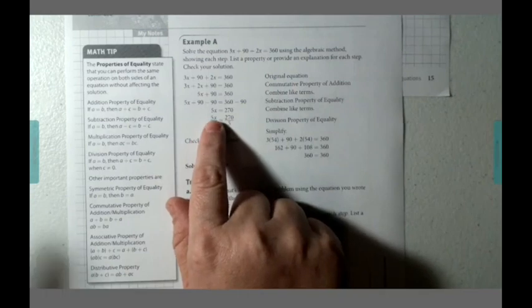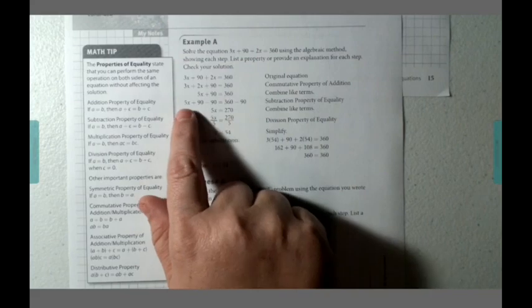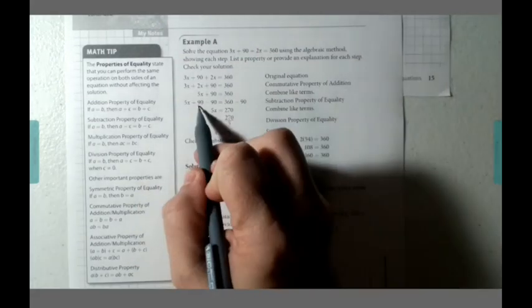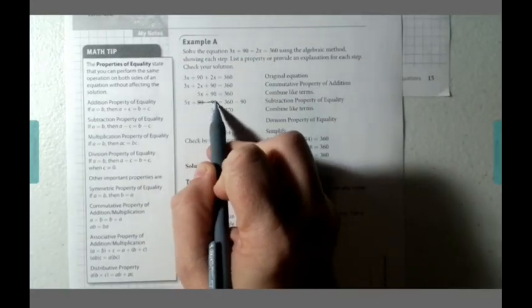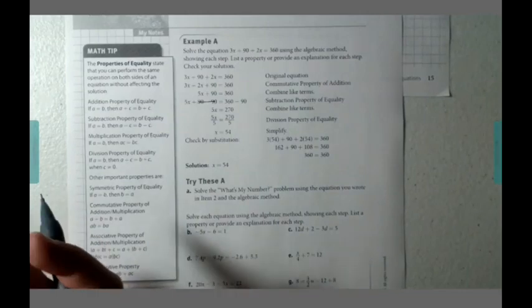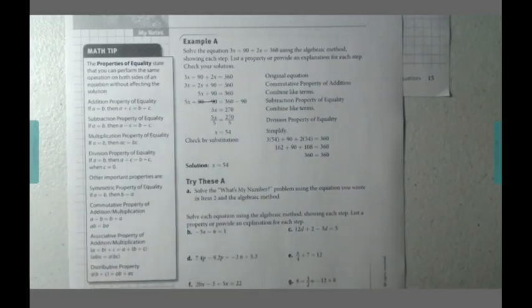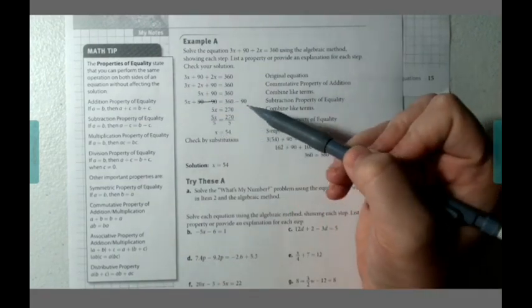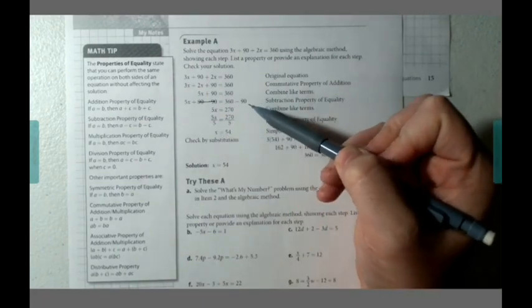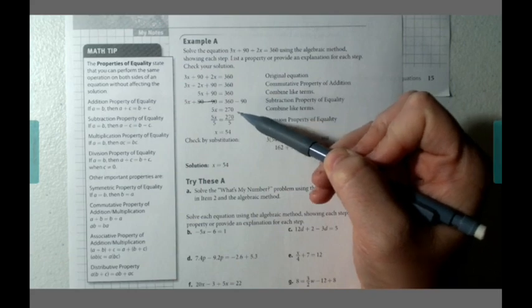Again, we're going to do a combining of like terms because we have 5x, and these two pieces would have, in essence, they're opposite. So they would have amounted to zero. There's no reason for us to write plus zero. And then they did the 360 minus the 90, which gave them 270.